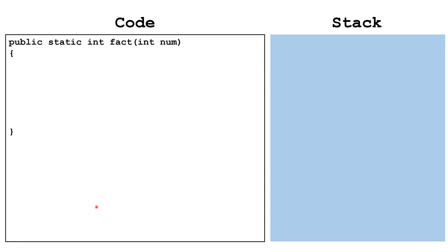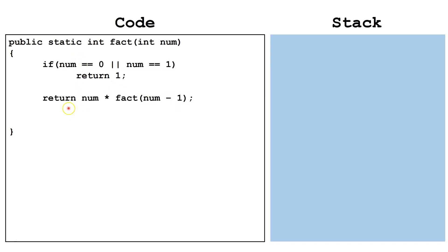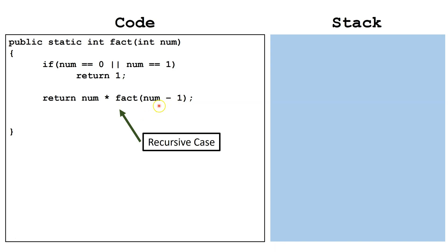Let's write out some code to solve this recursively in Java. First, we are making a method, 'fact', that takes in an integer parameter. Here is our base case: if num is zero or one, we return one — zero factorial or one factorial is one. This is our base case because it does not call itself. Next, we have our recursive case, where we multiply the number times the factorial of one less than the current number. This is our recursive case because we are calling the same method again, but passing it a smaller problem this time.